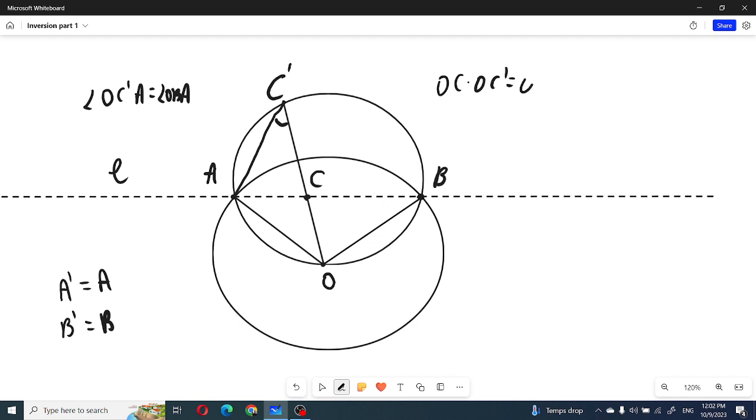At first notice that OC times OC prime equals OA square. So this means that OA must be the tangent to the A C C prime triangle circumcircle, circle of A C C prime. So angle from here we will conclude that angle OAC must be equal to angle OC prime A.